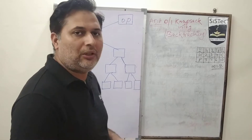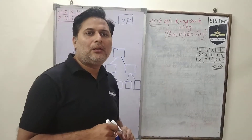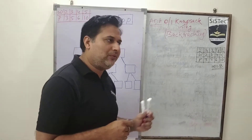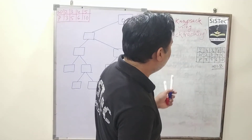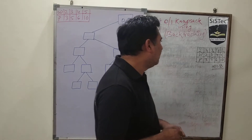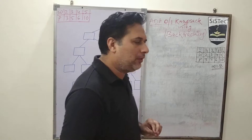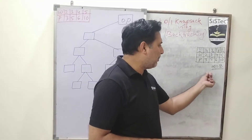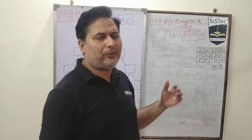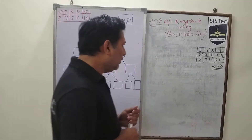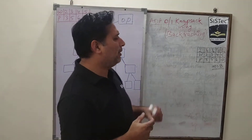Hello guys. Today we will discuss one more problem based on backtracking: the 0-1 knapsack problem. We will see one example. The question is we have given 4 weights with their corresponding profit. We have to fill the knapsack of capacity 8 using these weights such that the knapsack is filled with maximum profit. Let's see how backtracking can be used to solve this particular problem.